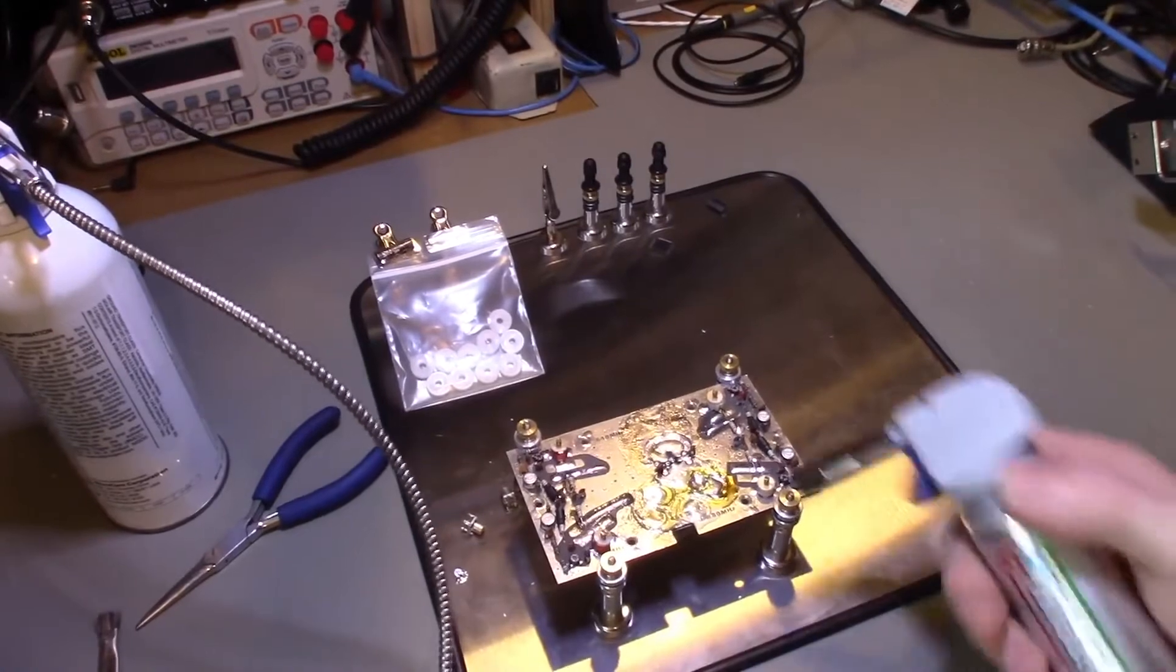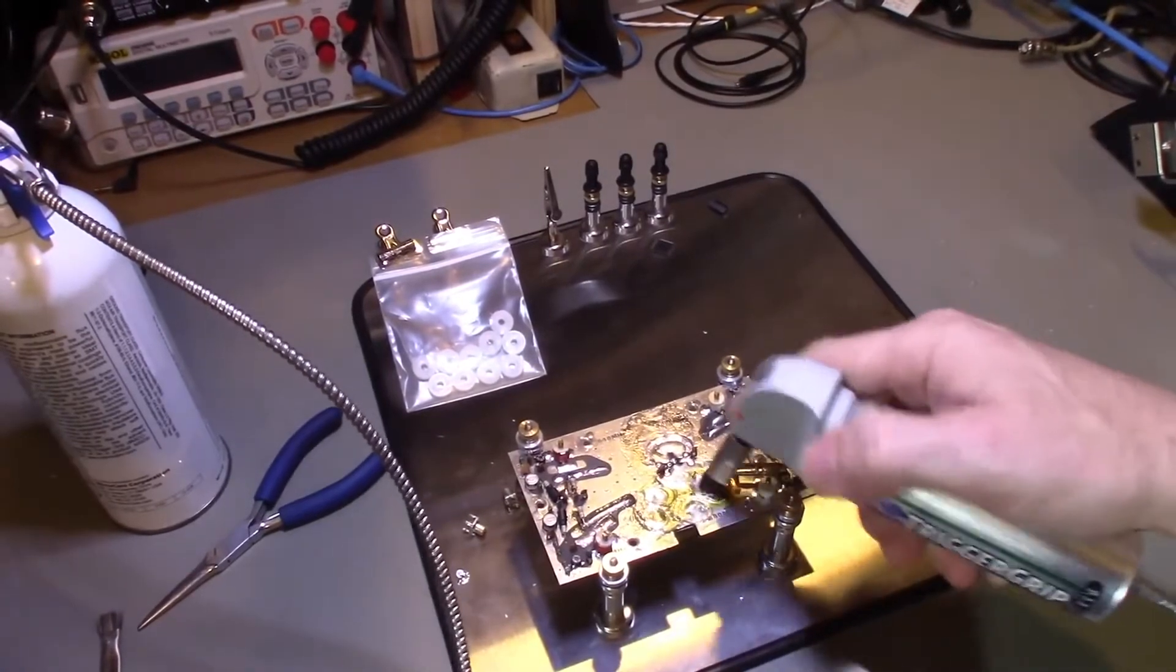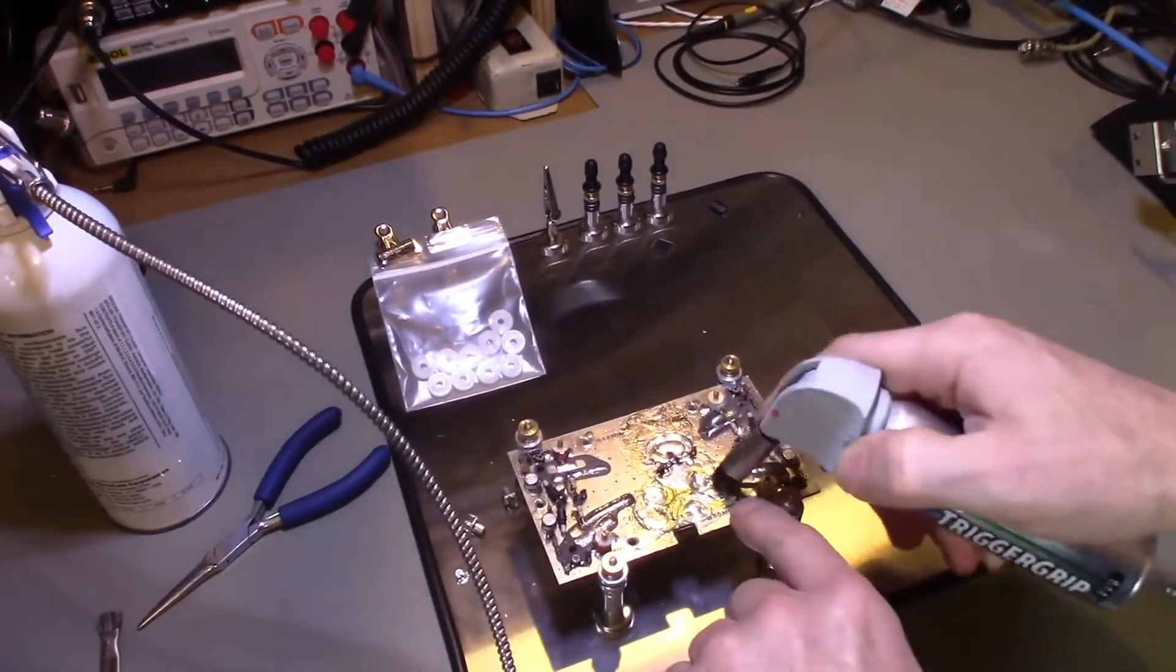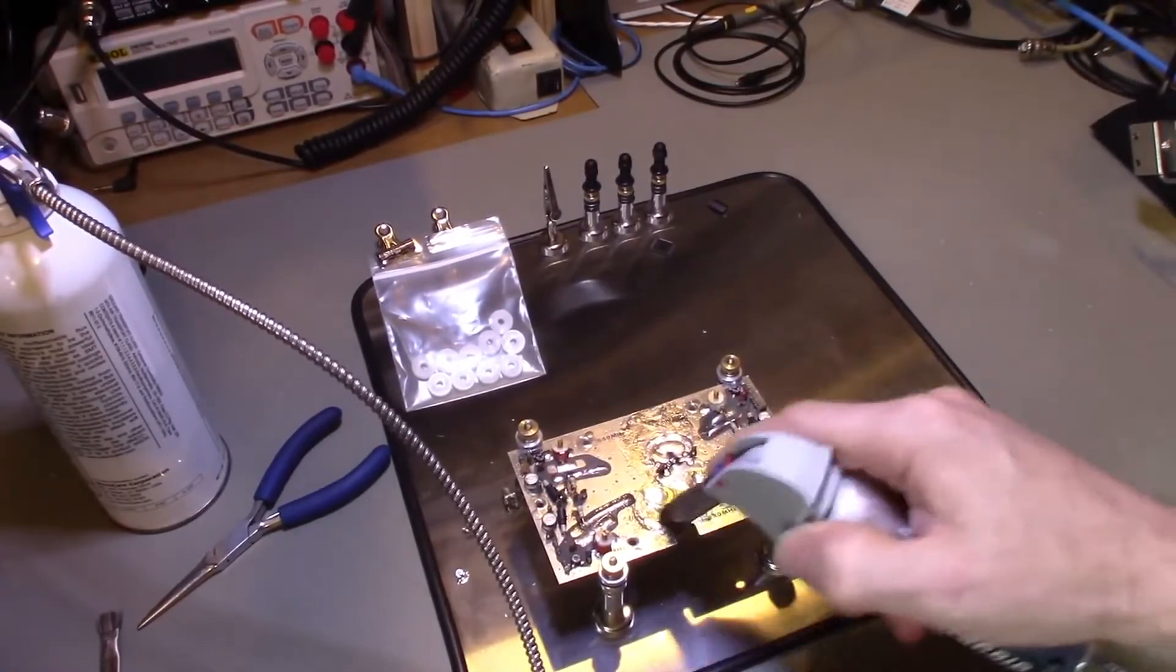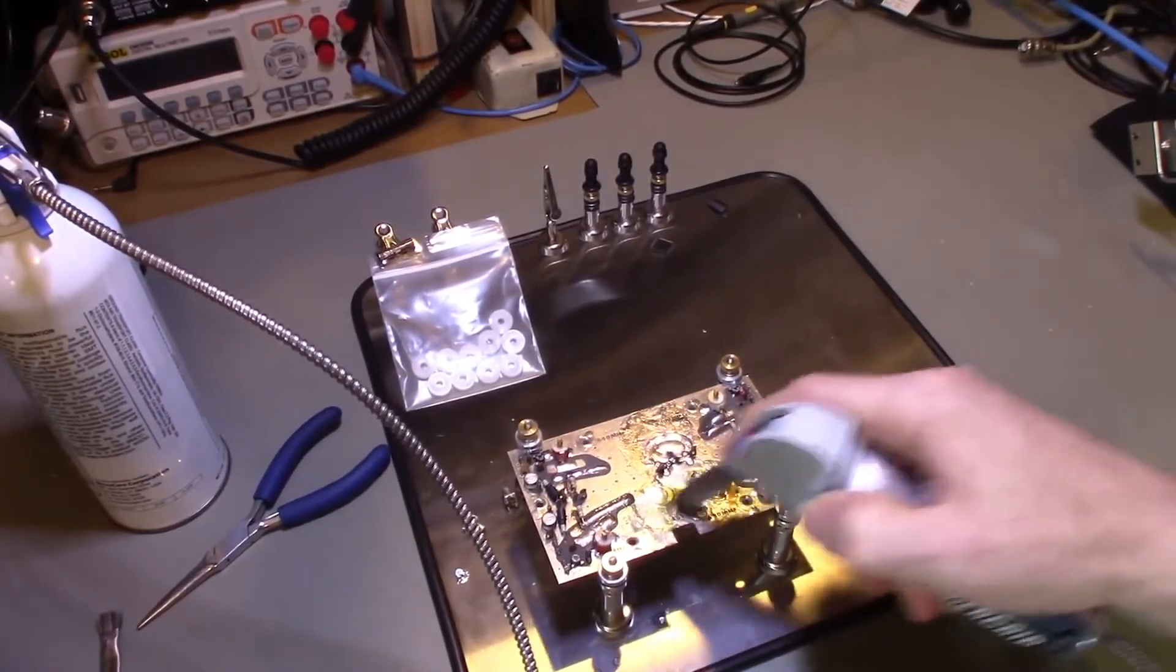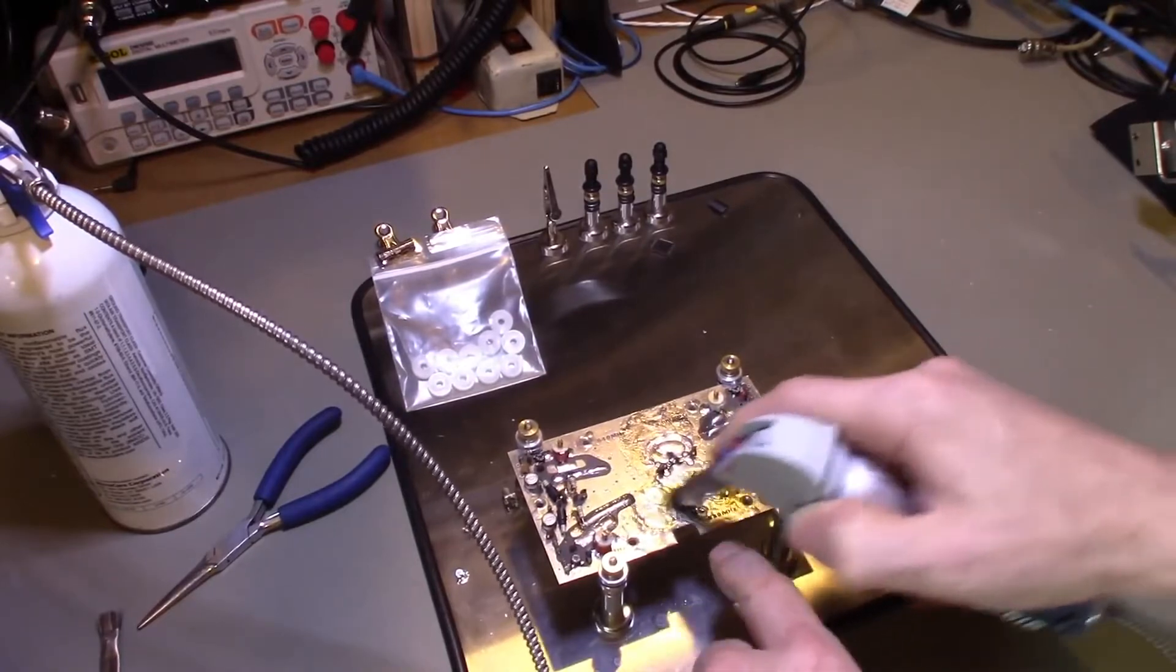So we got lots of flux residue there. You just give her a squirt, get a little bit of solvent. And you can see that stuff's caked on there because it's still there even, you know, it's not liquid.